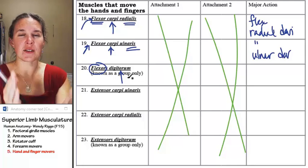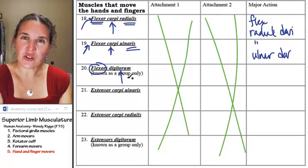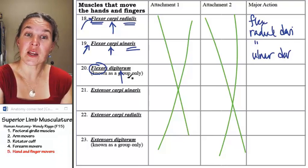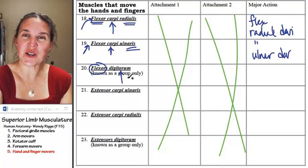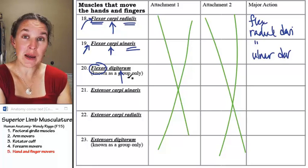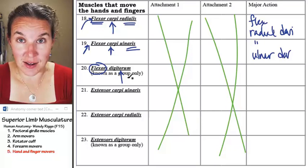So you can imagine flexor carpi radialis is on the flexor surface on the lateral side. Flexors digitorum run down the middle. Flexor carpi ulnaris runs down the medial side, so I've got three muscles on the flexor surface, and I know exactly where they are. Done.